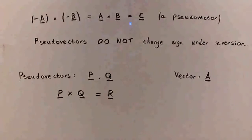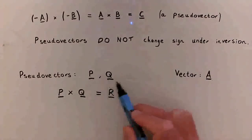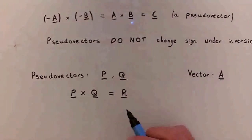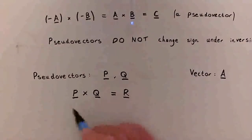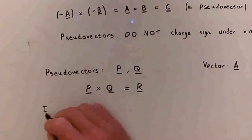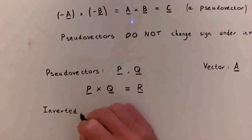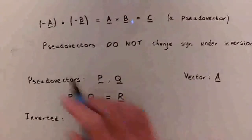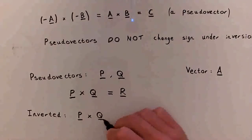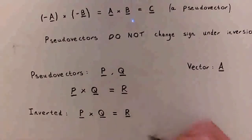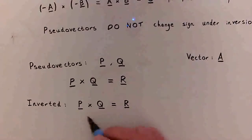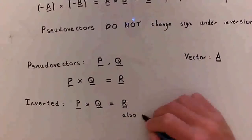Now let's explore what happens if we take two different pseudovectors p and q and find how their cross product behaves under an inversion. In the original coordinate system, pseudovector p and pseudovector q have cross product r. Performing the inversion: pseudovector p doesn't change its sign, so it stays the same, and pseudovector q doesn't change its sign either. The result is exactly the same whether we have an inversion or not. Therefore, the cross product of a pseudovector and a pseudovector is also a pseudovector.